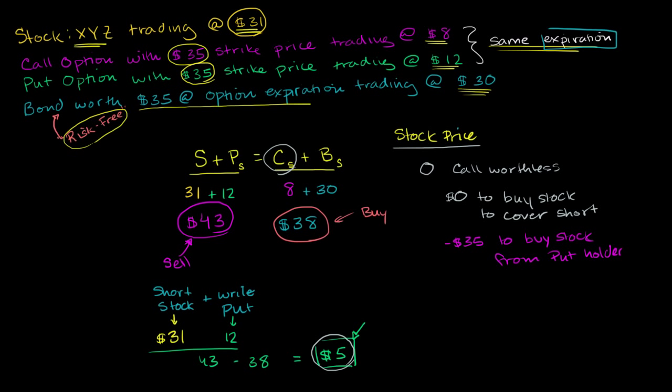But the good thing is that we have this bond. We own this bond that's now worth $35. We have a $35 bond. So we can use the $35 bond to spend the $35, essentially give that $35 to the holder of the put. And everything cancels out. So we can still keep our original $5. So that's the situation where the stock price went to zero.